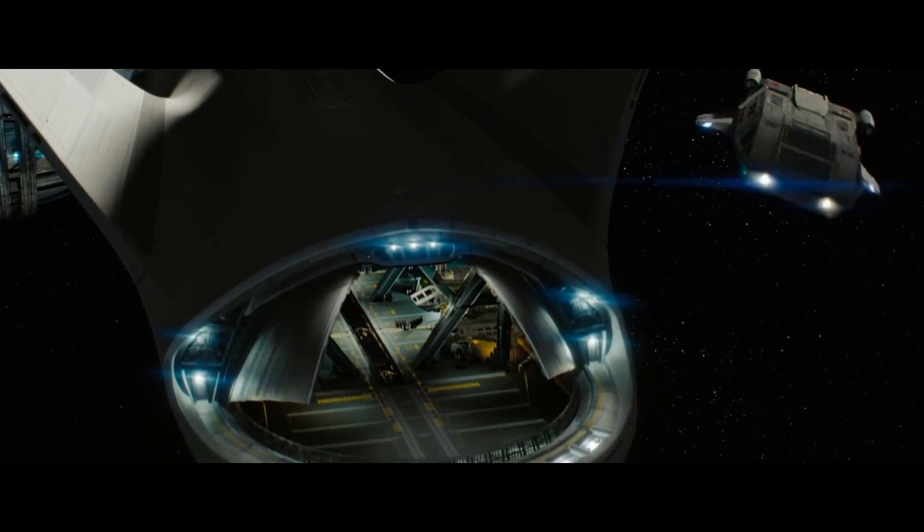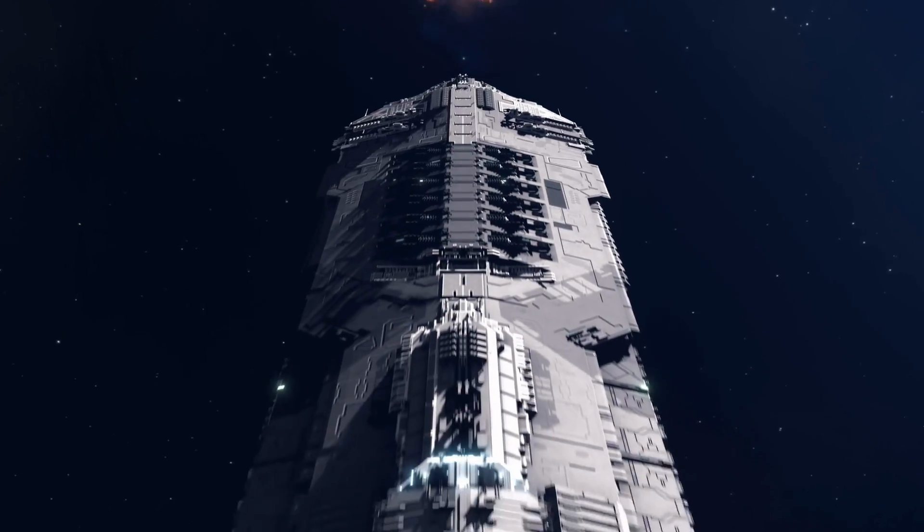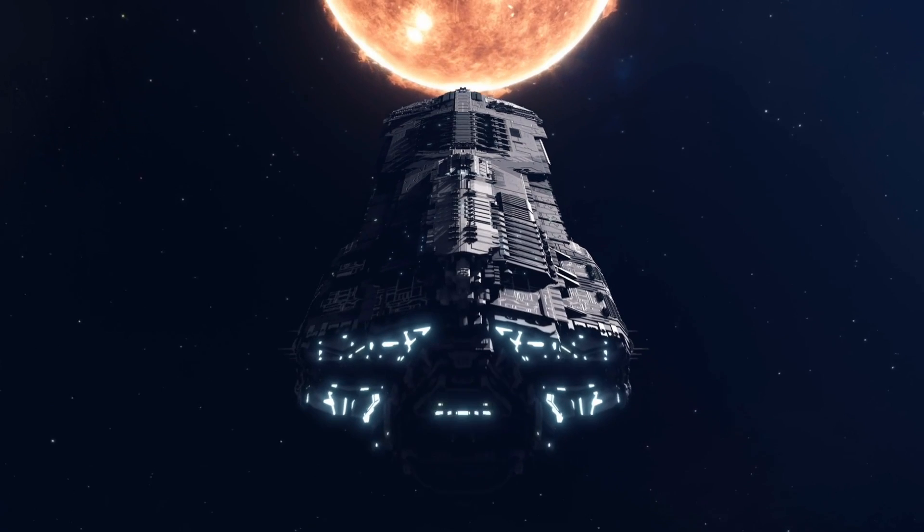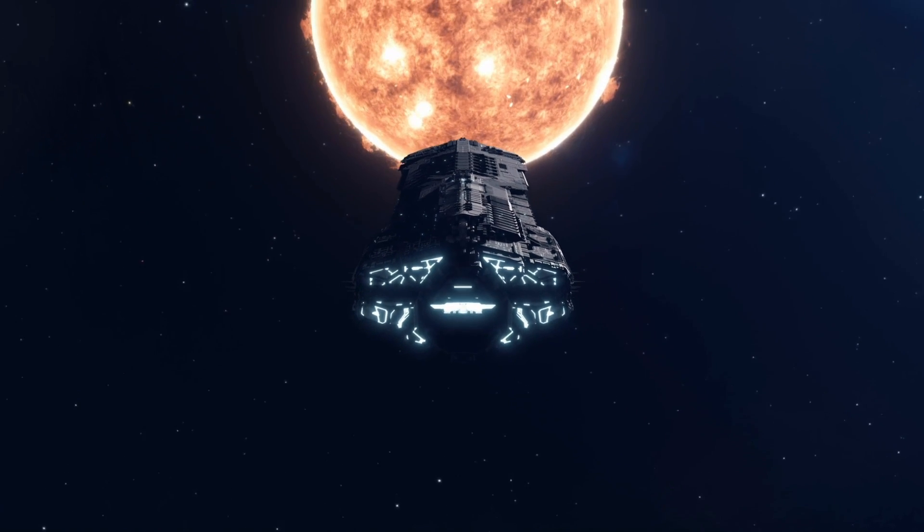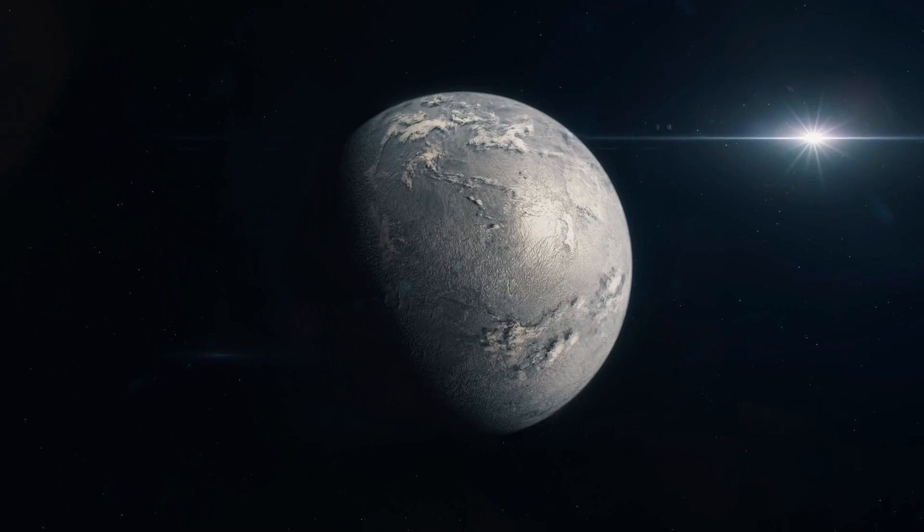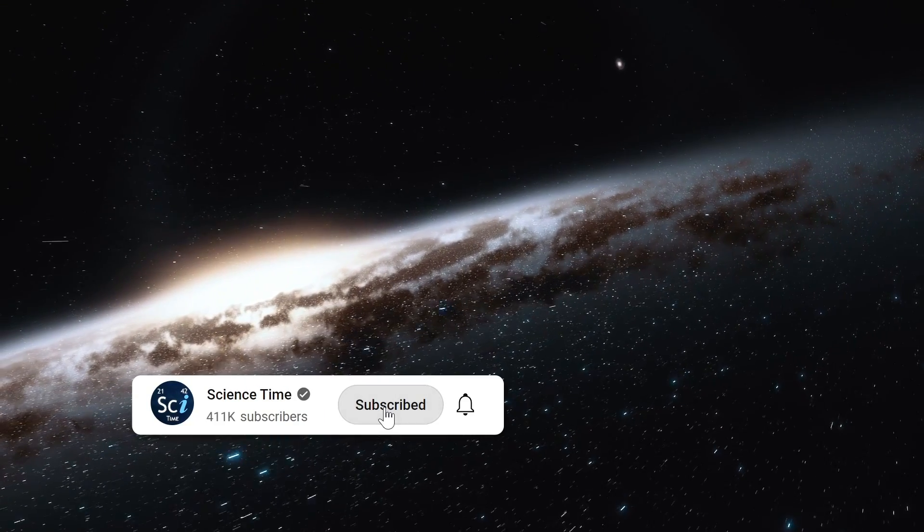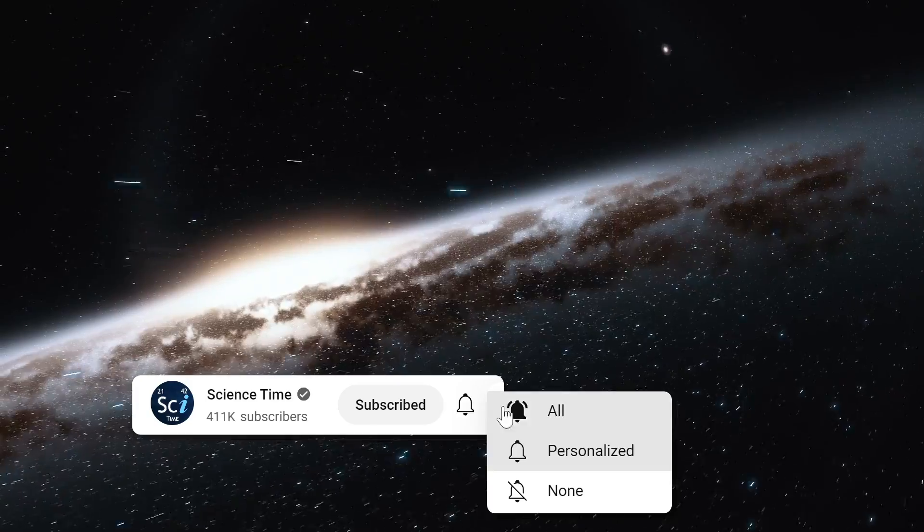So if you could travel at the speed of light, according to the clocks on Earth, you would reach the sun in about 8 minutes and Alpha Centauri in about 4.2 years. But what about the other worlds in the Milky Way galaxy? Our galaxy alone contains more than 100 billion stars and at least as many planets.